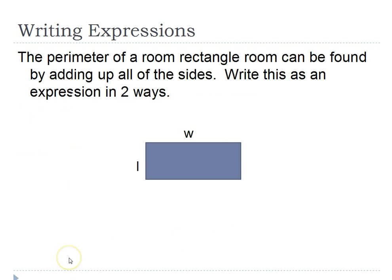In this next problem you're going to find the perimeter of a rectangular room, which can be found by adding up all of the sides. Write this as an expression in two ways. Take a look at what is happening in the problem and see if you can find at least one expression, if not two. Go ahead and do that now.